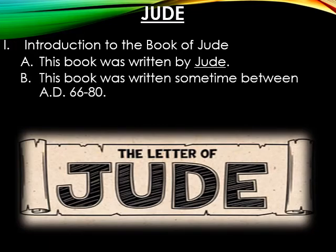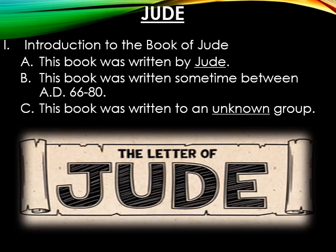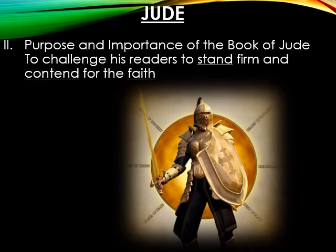This book was written sometime between A.D. 66 and A.D. 80. We believe it was written to an unknown group — no specific locality is mentioned, but the letter was likely intended for Jewish believers scattered throughout the land based on its context and teachings. Jude wrote this to challenge his readers to stand firm and contend for the faith, deciding to write this epistle because some had crept in and begun teaching false doctrine.